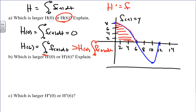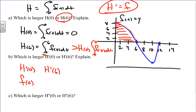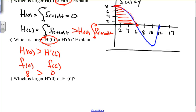Next, which is larger: h'(0) or h'(6)? Since h' equals f, we're really comparing f(0) and f(6). Looking at the graph, f(0) equals 8 and f(6) equals 0. Since 8 is greater than 0, h'(0) is larger than h'(6).